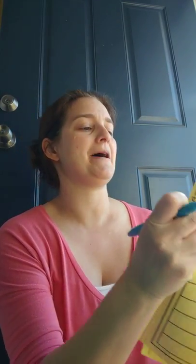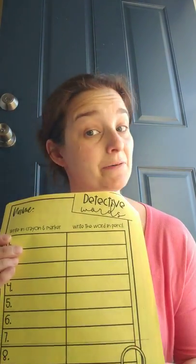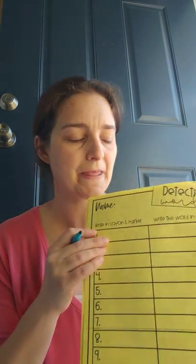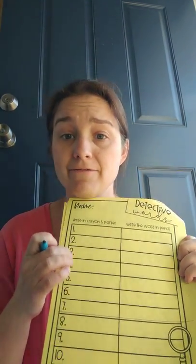The next part of our packet is the detective words. In one column it's gonna have 'write the word in pencil,' which we did on the other page, and then over here you're gonna write the word in either crayon or marker — whatever you have available. If you don't have a crayon or marker and you have colored pencils, that works too. Again, vary your words from the pink sight word list — don't just do 'learn, learn, learn' the whole time.